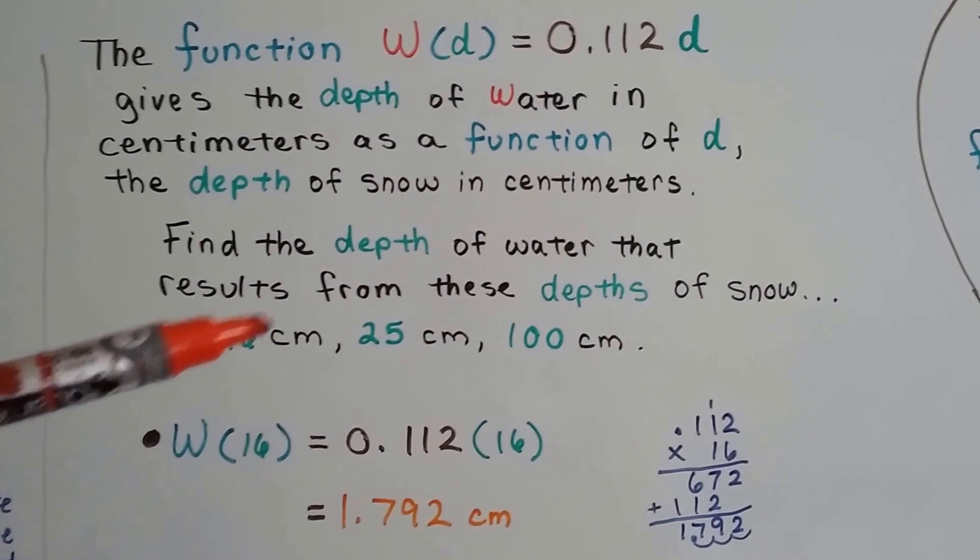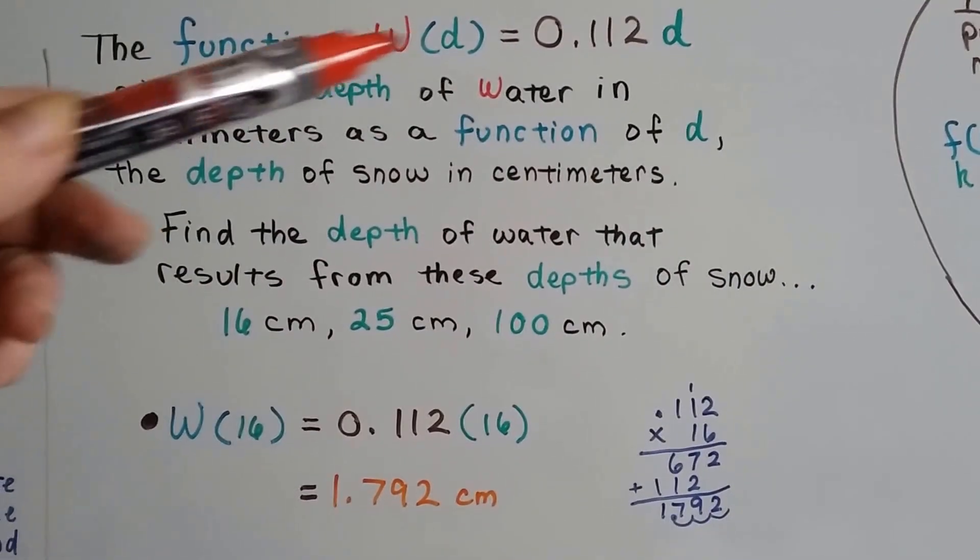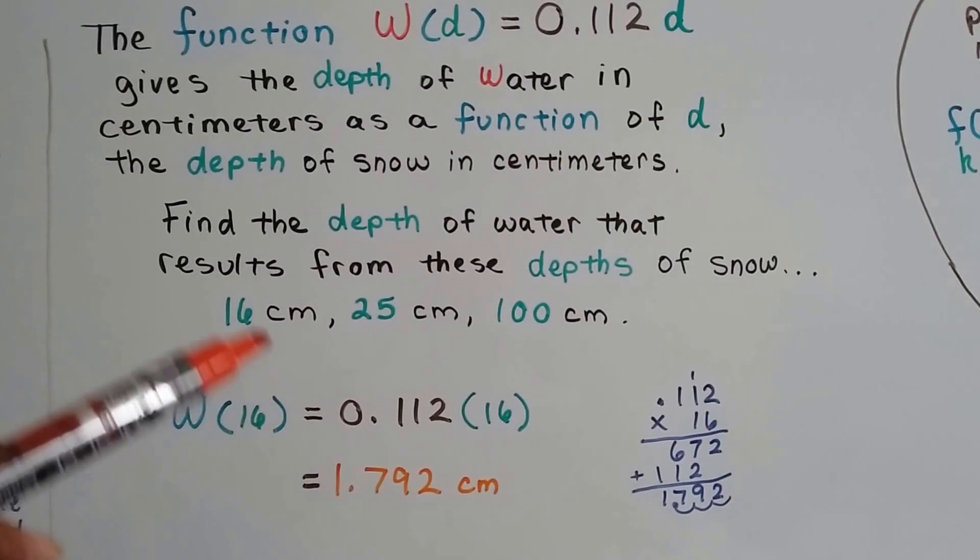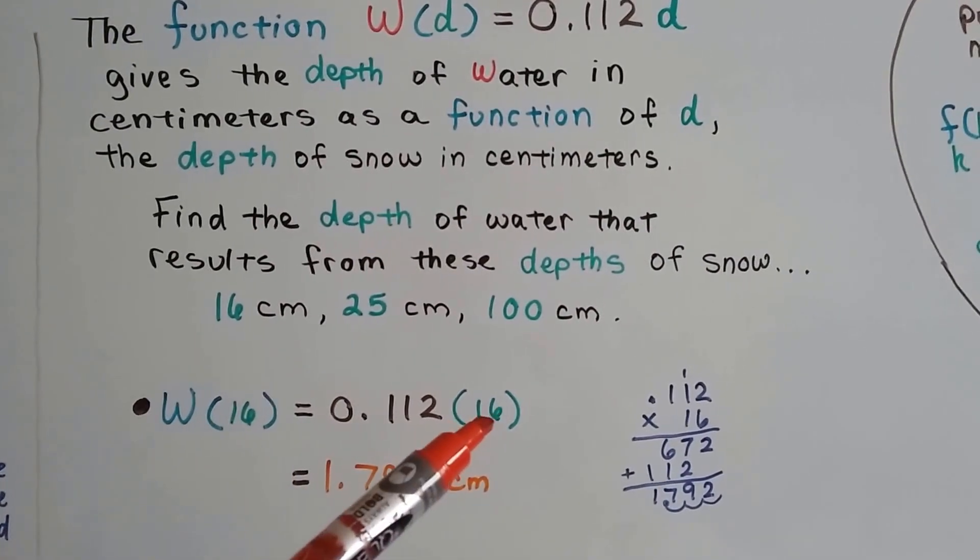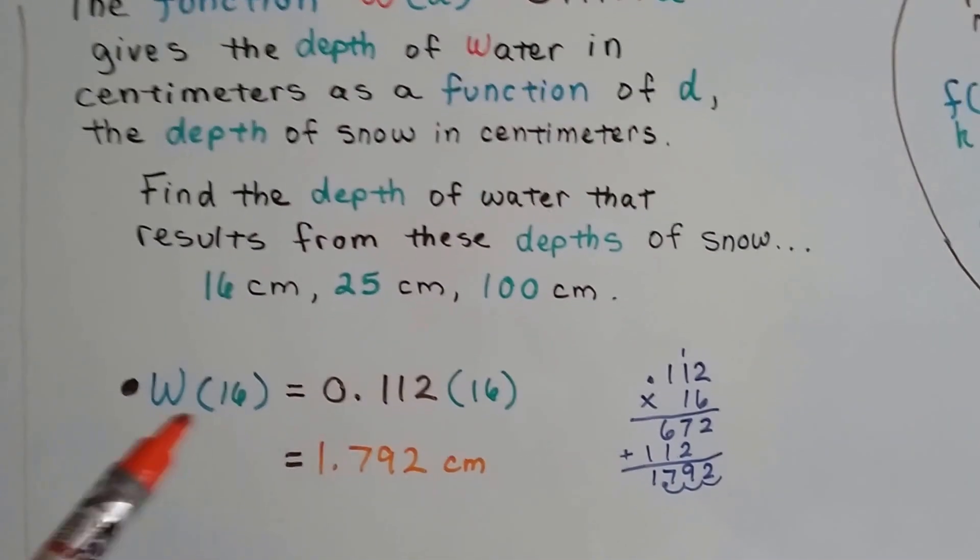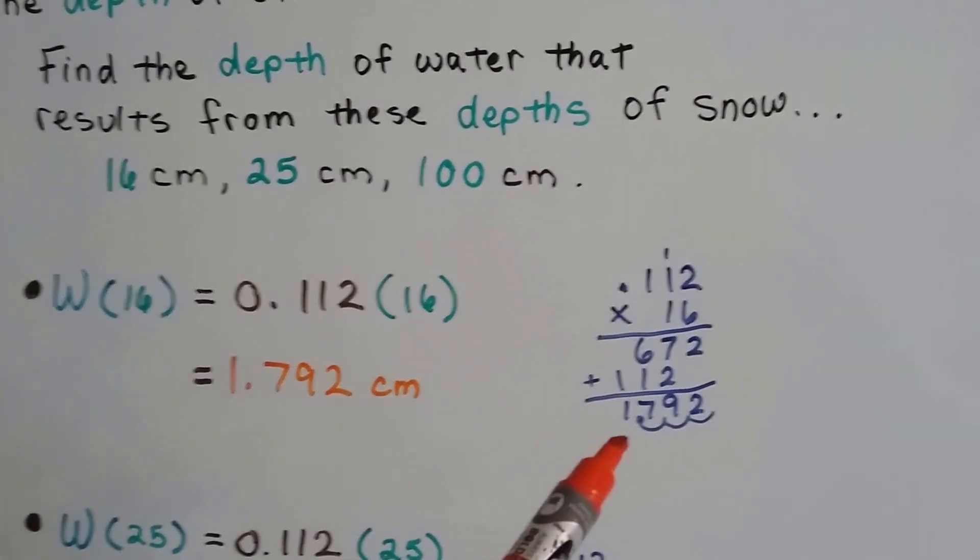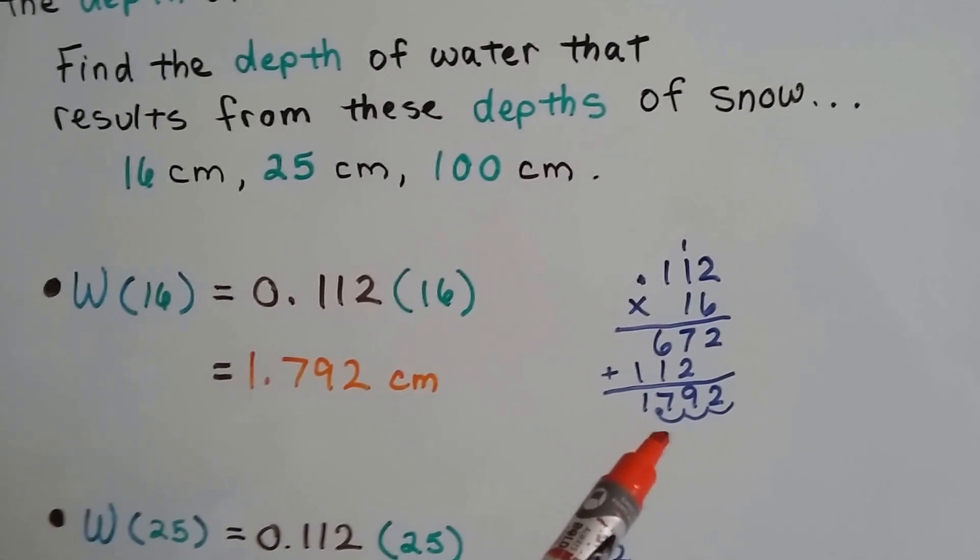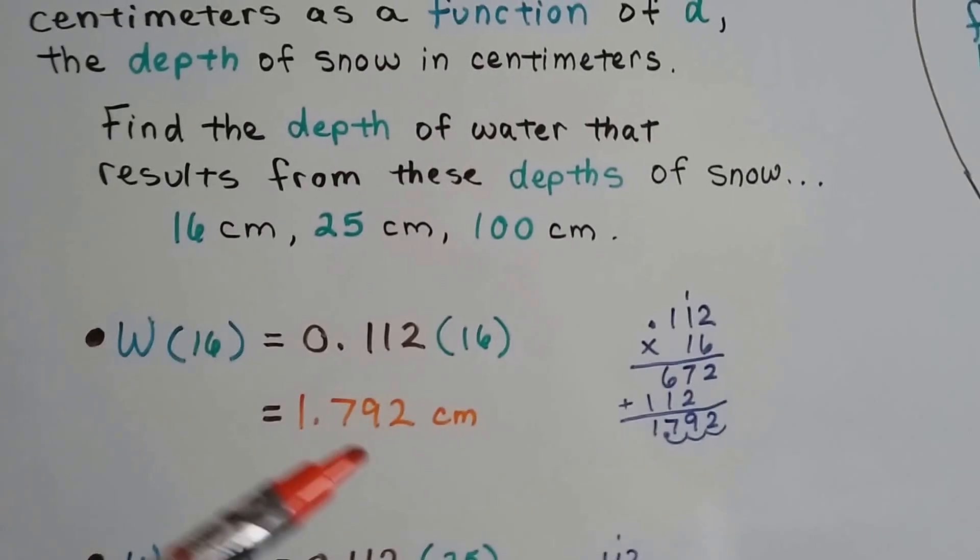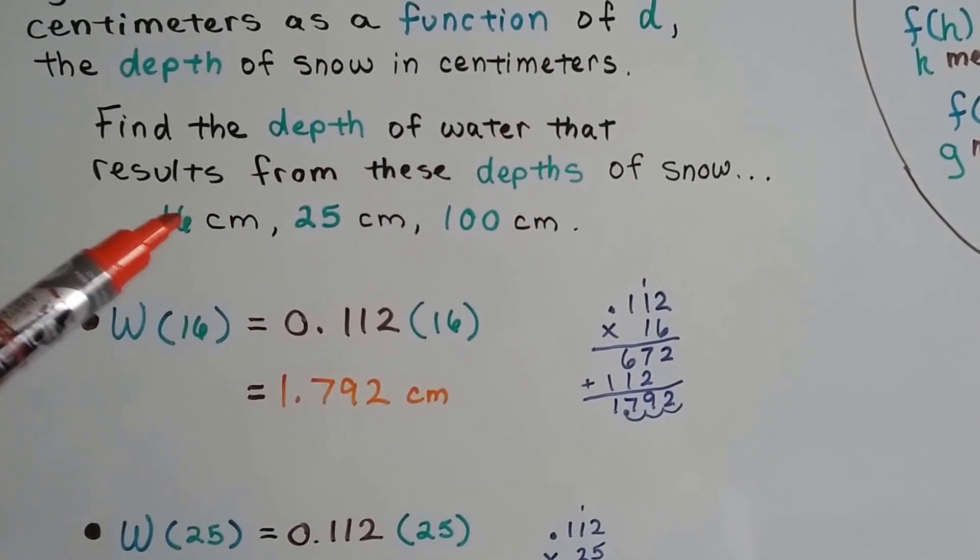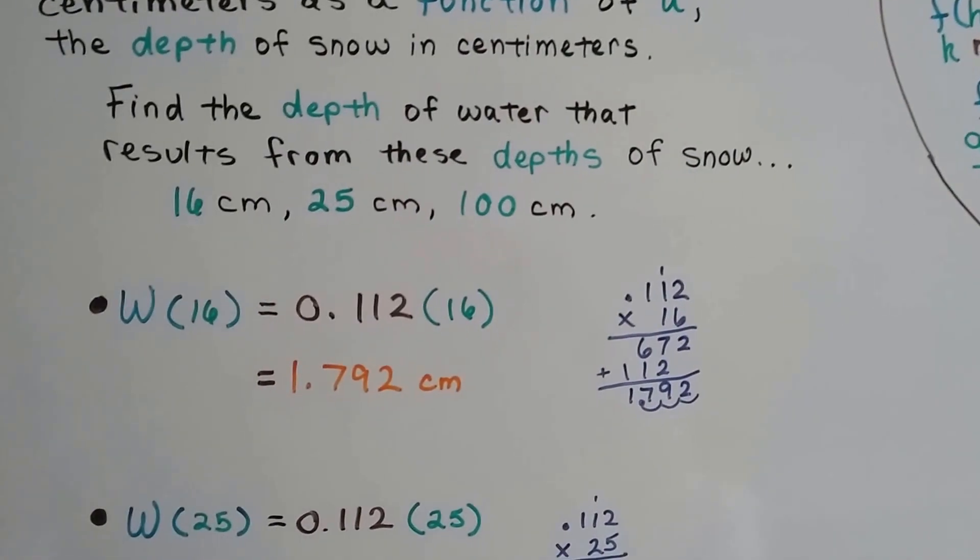If snow was 16 centimeters, how deep would it be once it melts and turns into water? We plug it into this and put the 16 in where the d was. We do our multiplication. 0.112 times 16 comes out as 1.792 centimeters. So if you've got 16 centimeters of snow, it's going to melt down to just 1.792 centimeters deep of water.